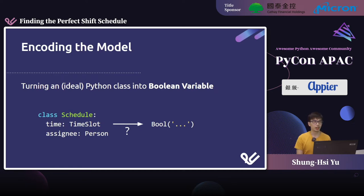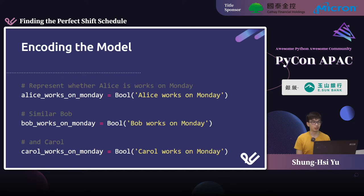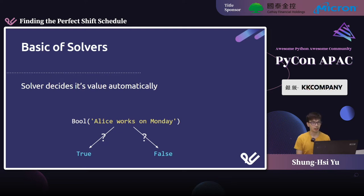The trick is that while we're limited to Boolean variables, we're not limited to how many we can use. So instead of one, we use three: one representing whether Alice is working on Monday, one for Bob, and one for Carol. Each is a placeholder for something we're not sure of. The beauty of using the solver is that it determines the value for us — if the Boolean is true, Alice should be working Monday; if false, she's not.